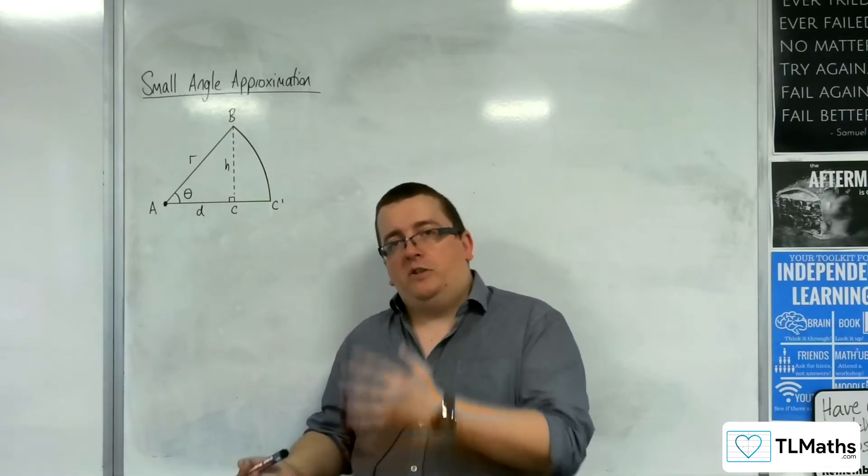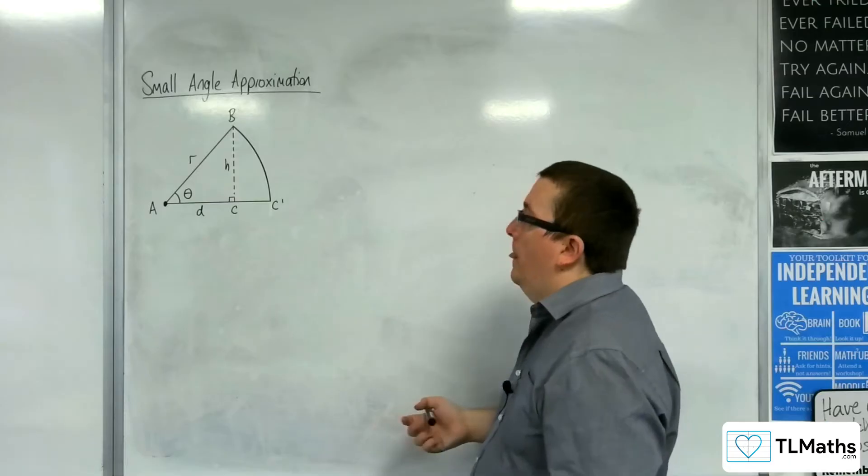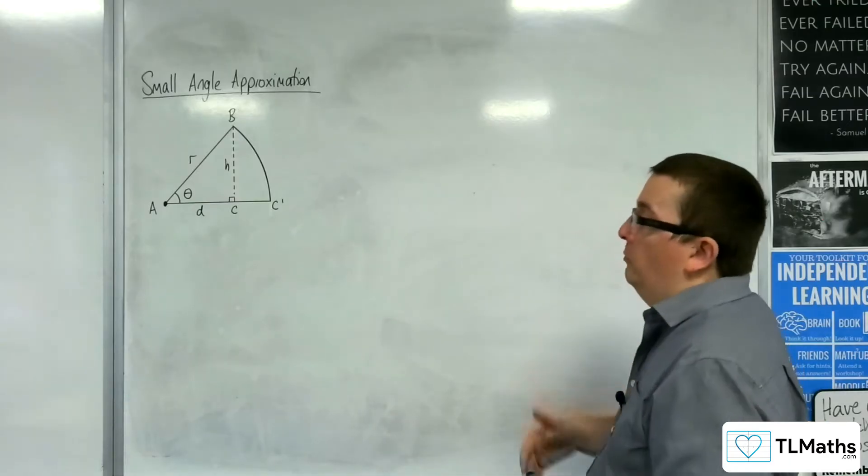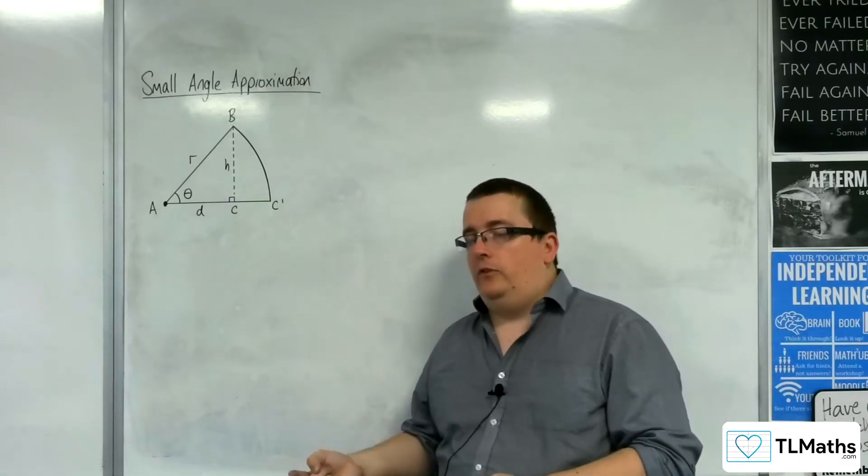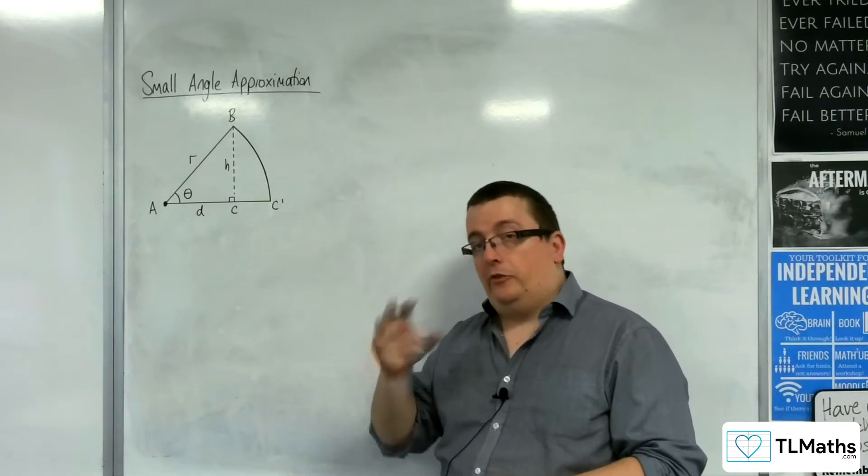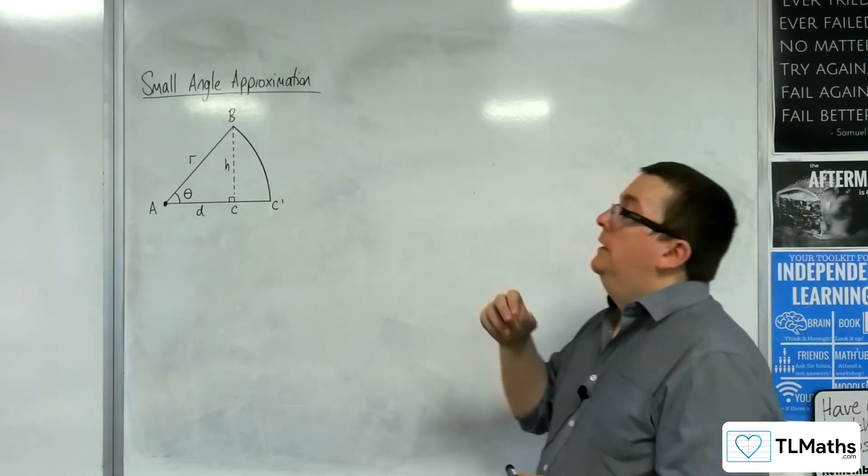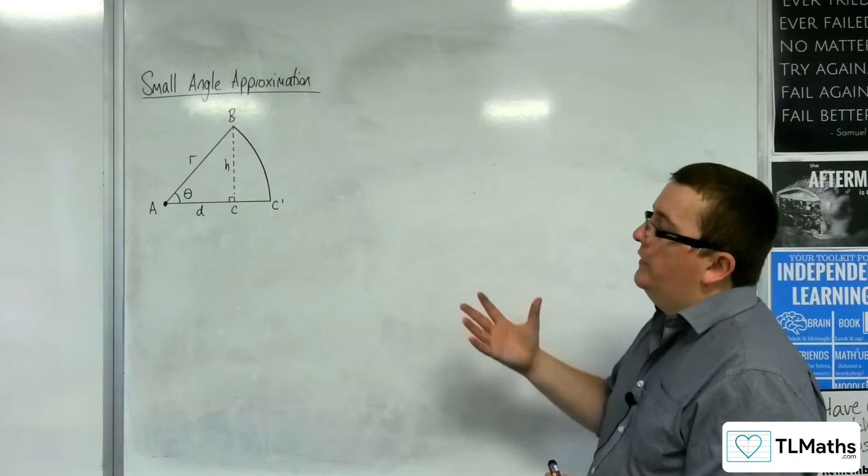You get a reasonable approximation when you're using your small angle approximation. So I'm going to show you how to derive these, well, the sine and tan small angles, and from that we'll get the cosine one, using this geometrical approach, using this diagram.